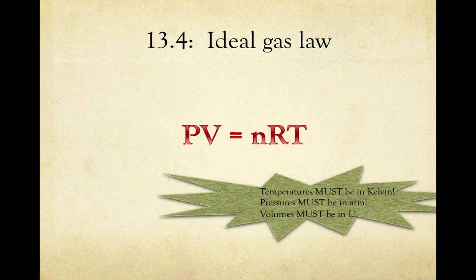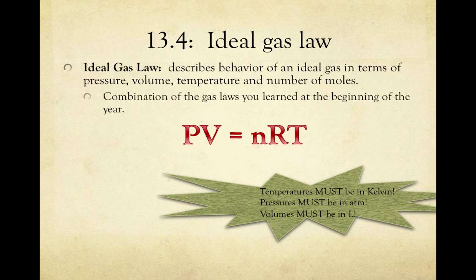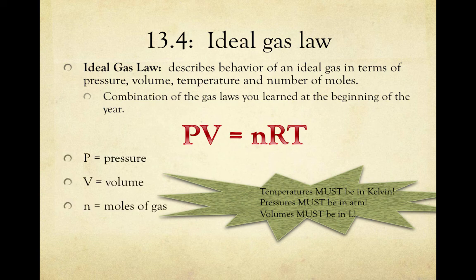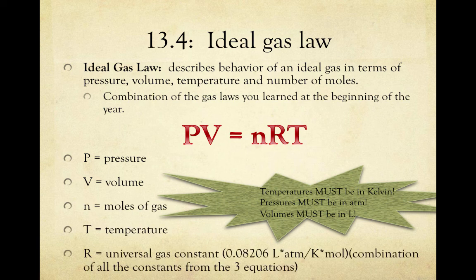PV equals nRT is the ideal gas law, sometimes called PIVNR. This describes the behavior of an ideal gas in terms of its pressure, volume, temperature, and number of moles. It's a combination of Charles' law, Boyle's law, and Avogadro's law. In this equation, P stands for pressure, V stands for volume, n is moles of gas, T is temperature, and R is the universal gas constant, which is 0.08206.